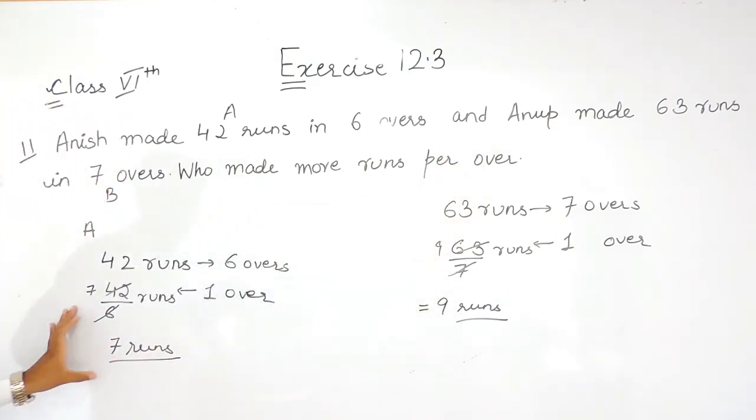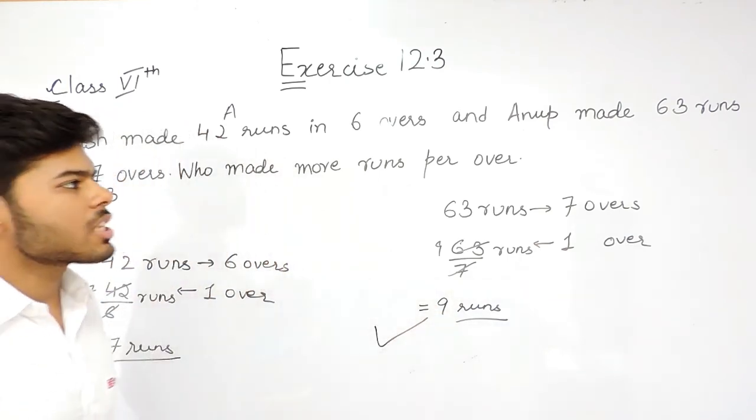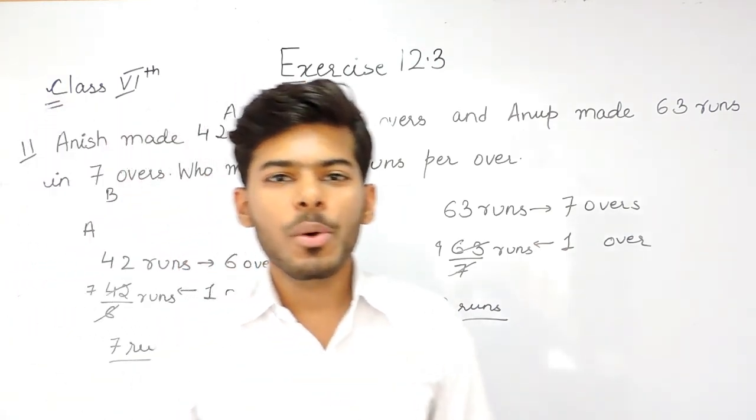Anish scored 7 runs. That means Anup scored more runs per over. This is how we can solve this question. Thank you.